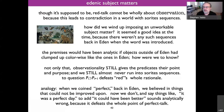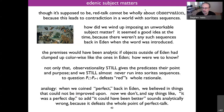Some of you might know Chalmers's paper on color properties where he talks about Edenic color properties — the kind of color properties we imagine confronting back in Eden, which are simple, primitive, and dissective. Red talk is supposed to be fully about observation, but this leads to contradiction in a world with Sorites sequences. So how did we wind up imposing, analytically or aspirationally analytically, an unworkable subject matter? It seemed like a really good idea at the time because there weren't any Sorites sequences back in Eden.